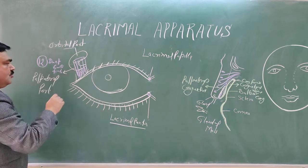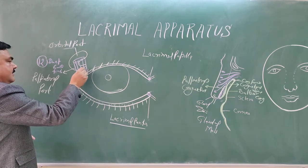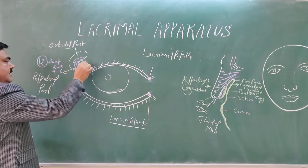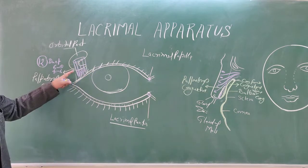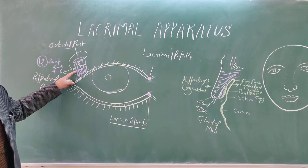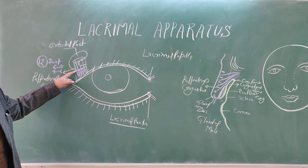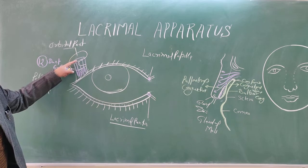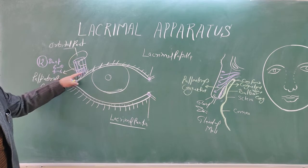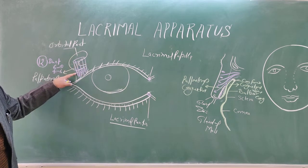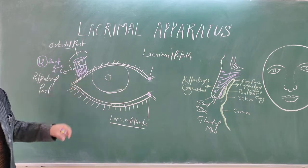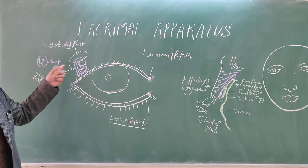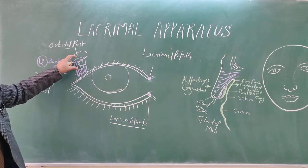If the palpebral part is removed for any reason, this removal is equivalent to removal of the whole gland, because all ducts pass through this palpebral part. If this part is removed, these ducts are also removed. So removal of the palpebral part is equivalent to removal of the whole lacrimal gland.